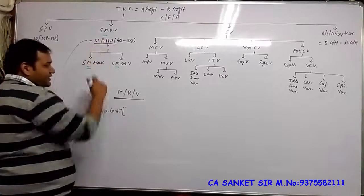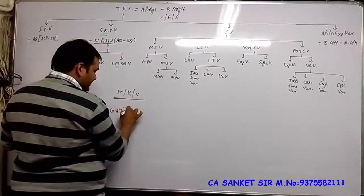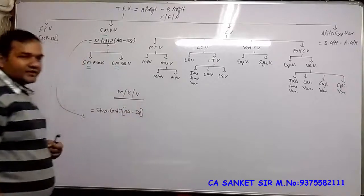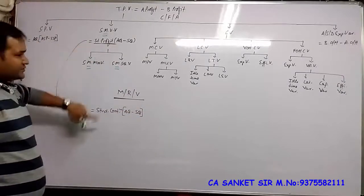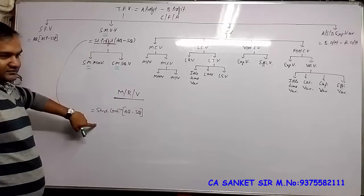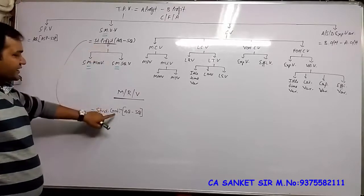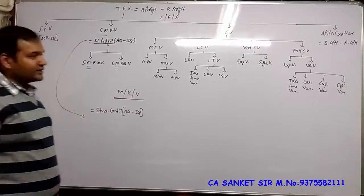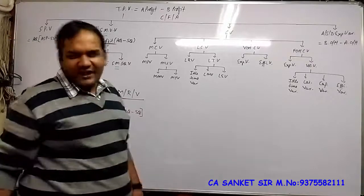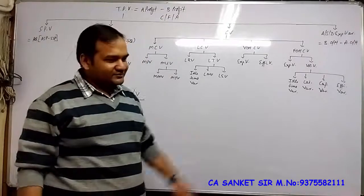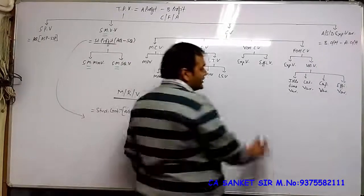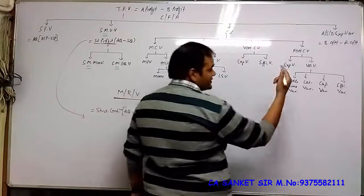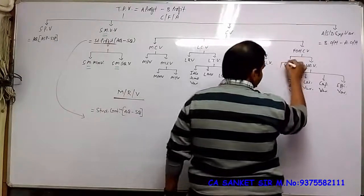In marginal costing, wherever 'Profit' appeared in the formula, it will be replaced by Contribution. For example, the Volume Variance formula becomes: Contribution × (Actual Quantity minus Standard Quantity). So this variance changes. And the best part — in the entire Fixed Overhead Variance, only one variance will come: that is Expenditure Variance.